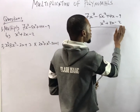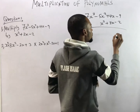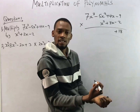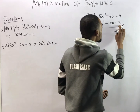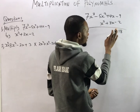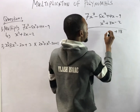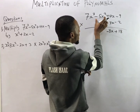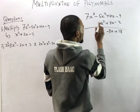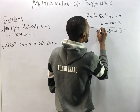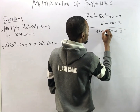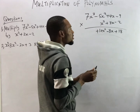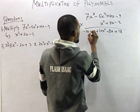Starting with minus 2: minus 2 times minus 9 gives plus 18, because minus times minus equals plus. Then minus 2 times 4s gives minus 8s. Minus 2 times minus 5s² gives plus 10s². And minus 2 times 7s³ gives minus 14s³. We are done with this first step.